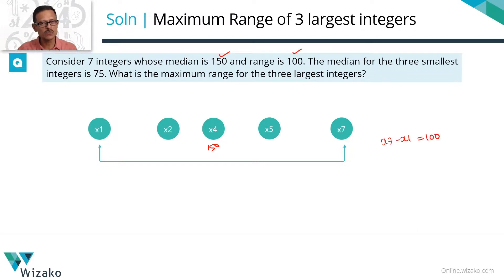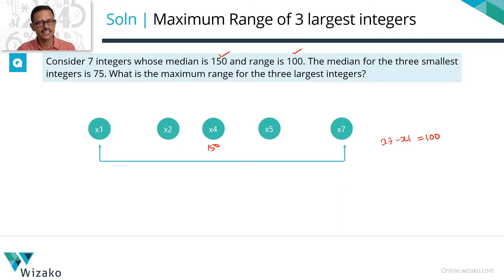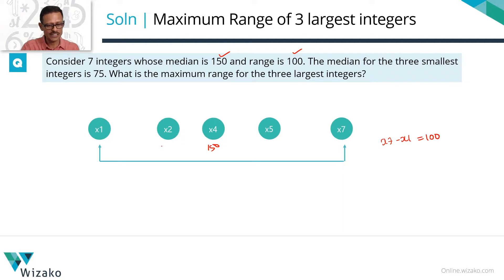The median for the three smallest integers is 75. The three smallest integers in ascending order are x1, x2, x3. The median of these three is x2, the second term, and its value equals 75. So we plug this in as well.